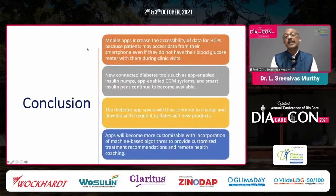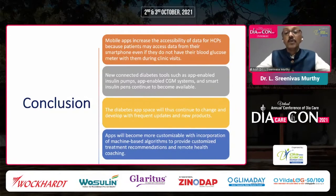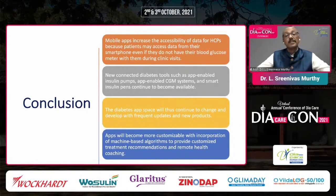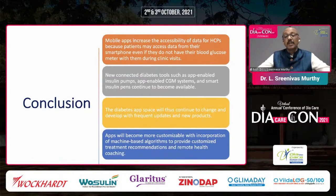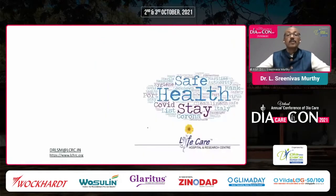Mobile apps increase the accessibility of data for HCPs because patients can access data from their smartphones even without their glucose meters during clinic visits. Especially during the pandemic with teleconsultations, this is a key method for managing chronic ailments like diabetes. New connected diabetic tools such as app-enabled insulin pumps, CGMs, and smart insulin pens continue to become more available. App space will continue to evolve with frequent updates, incorporating artificial intelligence algorithms to provide customized treatment recommendations and remote health coaching in the near future.